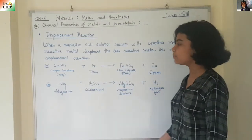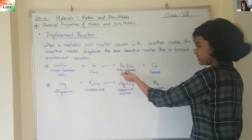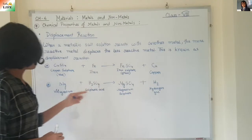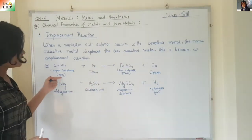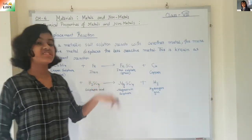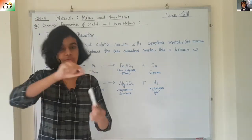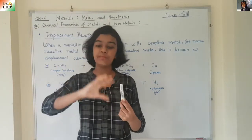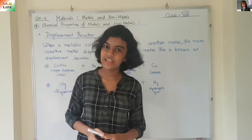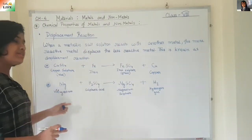Example: copper sulphate plus iron becomes iron sulphate plus copper. If you observe the solution, copper sulphate was first blue and then iron sulphate turns green, so you will see the blue turns into green in color. That was one example. Now let's move to the next one.